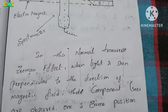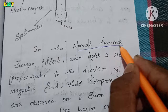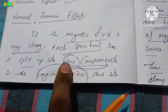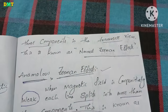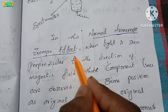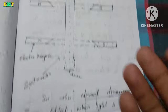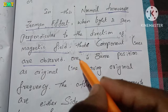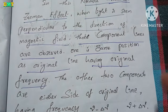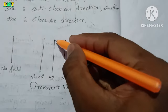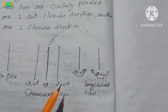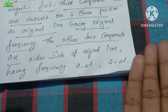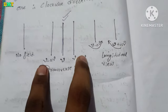In the normal transverse Zeeman Effect, when light is seen perpendicular to the direction of the magnetic field, three component lines are observed. One component is at the same position as the original line having the original frequency. The other two components are on either side of the original line, with frequencies approximately shifted from the original.